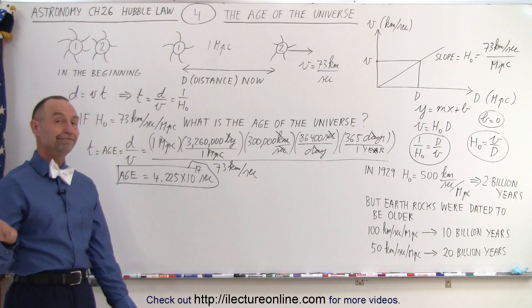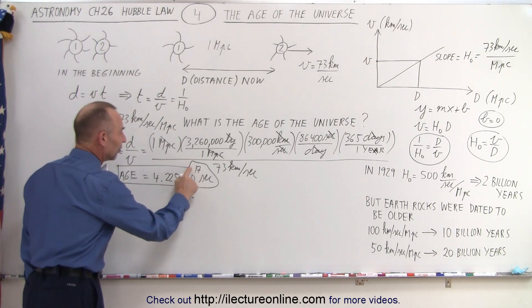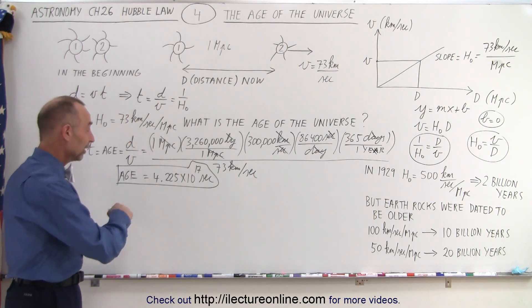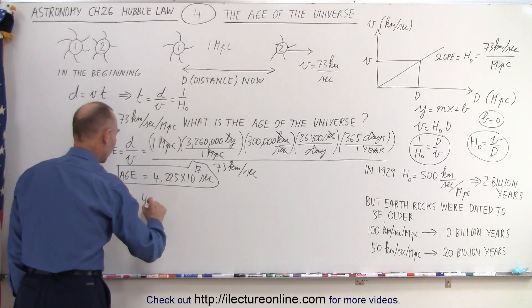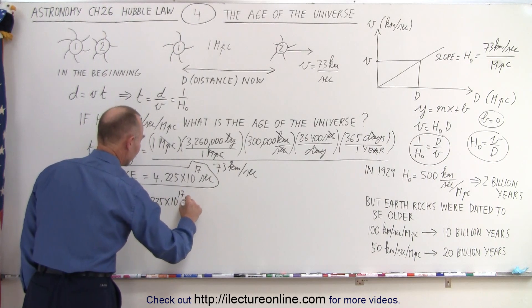Well, that doesn't really tell us much in the sense that we don't know how long that really is. Let's convert that to years. So let's take the age, which is equal to 4.225 times 10 to the 17th seconds, and convert that to years.